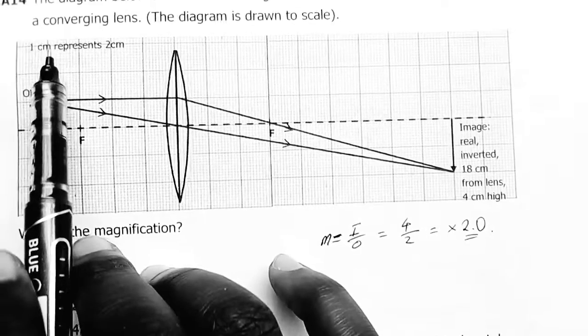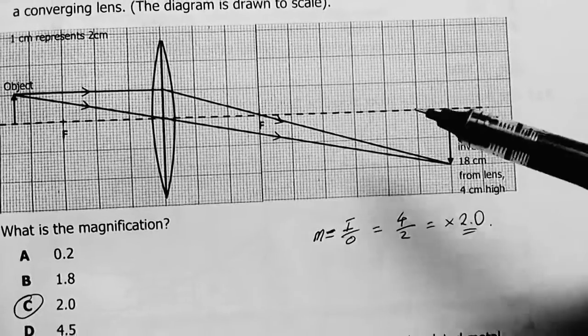I've used this: the height of the image is 4 centimeters, and the scale says one centimeter represents two centimeters, so these are two centimeters, meaning they represent four.